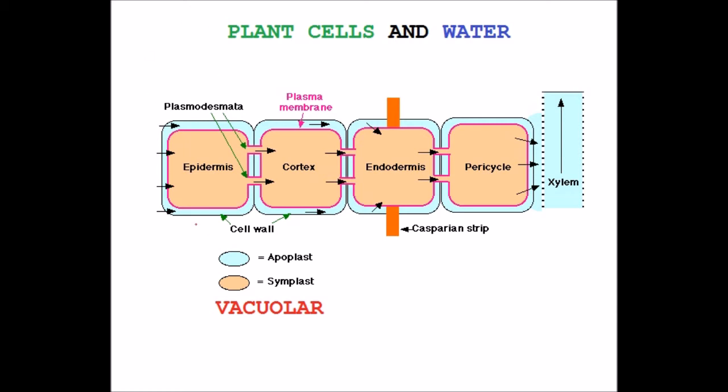I'll just show you. It goes through these little blue tracks here and through here, and then at the Casparian strip, it's diverted and follows that pathway, which is the symplast pathway.